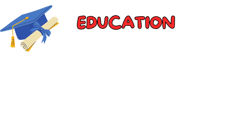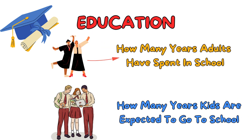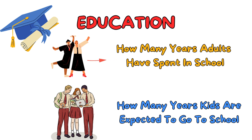Education. This part is about how well educated the people are. We look at two things: how many years adults have spent in school on average, and how many years kids are expected to go to school. More education usually means people have more opportunities and can make better choices in life.